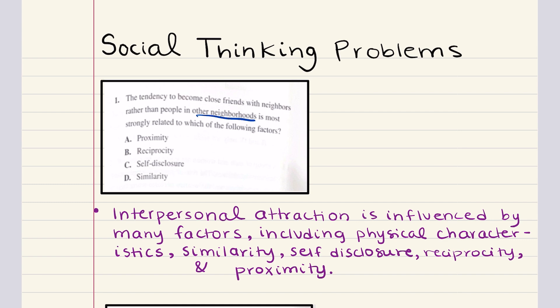Now this problem says that we're trying to look for an influence for social attraction that's based off of the tendency to become close to people who are nearby, being friends with your neighbors as opposed to people who live elsewhere. And proximity is what deals with the tendency to be attracted to those who are physically close by. And so the answer here for one is going to be A, proximity.